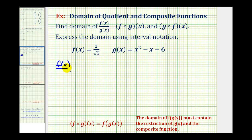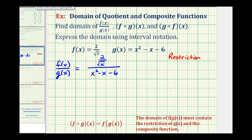So f(x) divided by g(x): f(x) is 2 divided by the square root of x, and g(x) is x squared minus x minus 6. We're going to have several restrictions on the domain, so let's keep track of those on the side. First, the square root of x requires x to be non-negative, and since x equals zero causes division by zero, we know x must be greater than zero. Now looking at the denominator, x squared minus x minus 6 can't equal zero, because that would cause division by zero. So we need to find and exclude those values.